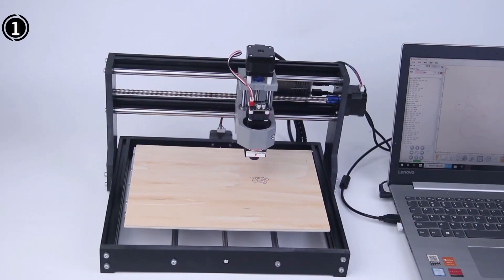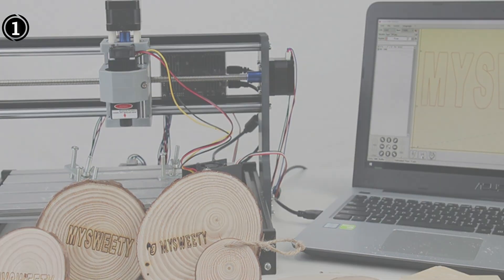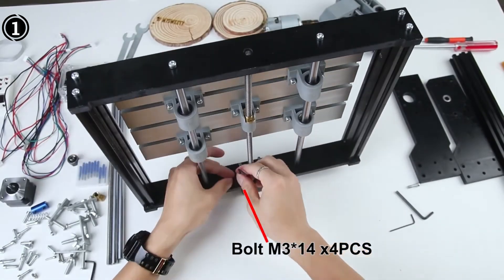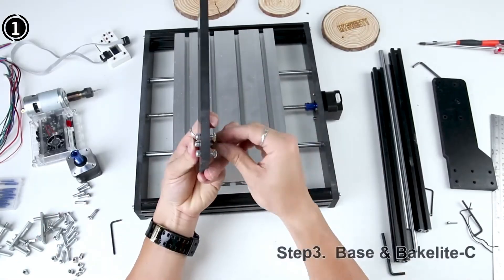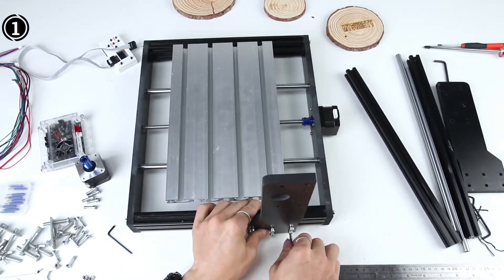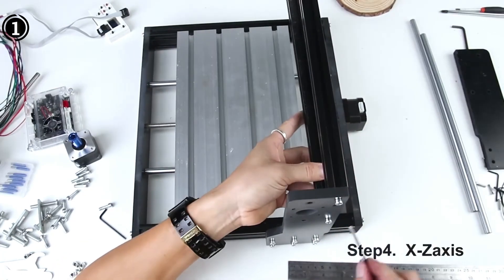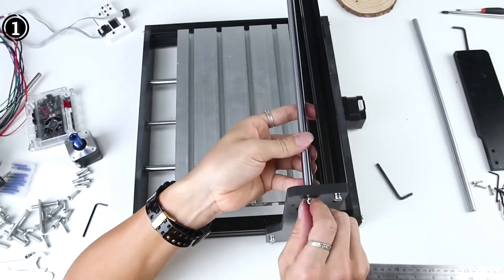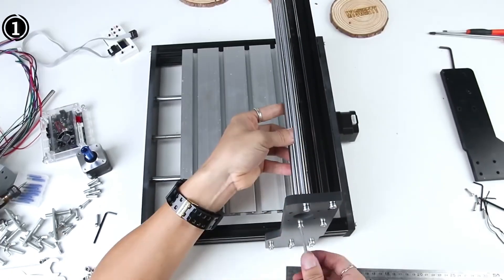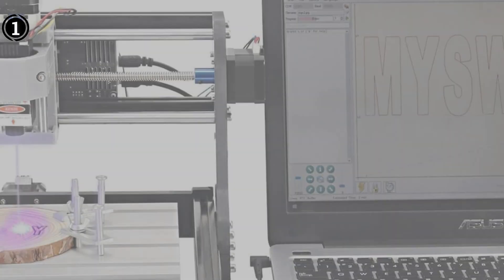It's worth noting that when employing the spindle, the module should be removed. One standout feature is the inclusion of a 1G capacity offline controller, allowing you to operate the CNC router without needing a continuous connection to a computer. This controller offers the flexibility to place the machine in various locations, such as a garage or workshop. The advantage of an offline controller is that it eliminates the necessity of leaving a computer connected during prolonged projects.